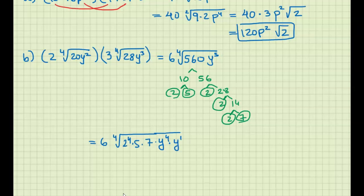So 6 times—2⁴ fourth root, we get 2¹. y⁴, the 4 divides by 4, we get y¹. And what's left inside the radical would be 5 times 7, which is 35, and then the y.